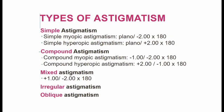There are other types of astigmatism, including simple, compound, mixed, irregular, and oblique. Simple astigmatism is where one focal line falls on the retina and the other falls in front or behind the retina. Compound astigmatism is where both focal points lie either in front or behind the retina. Mixed astigmatism is where one focal point lies behind and the other lies in front of the retina. Irregular astigmatism is where the flat and steep axes are not at right angles. Oblique astigmatism occurs along the 45-degree or 135-degree meridians.